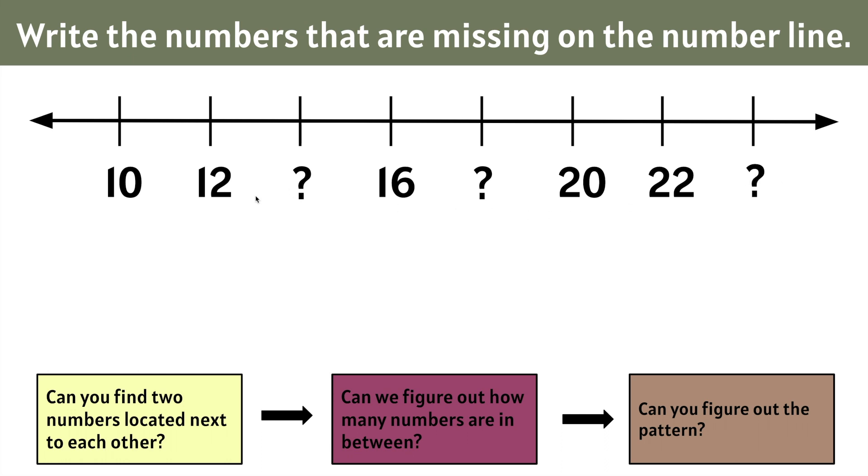The first step is we need to locate two numbers that are right next to each other. We can't use 12 and 16 because we have a missing number between them. We notice that 10 and 12 are located next to each other and 20 and 22 are also located right next to each other on this number line.